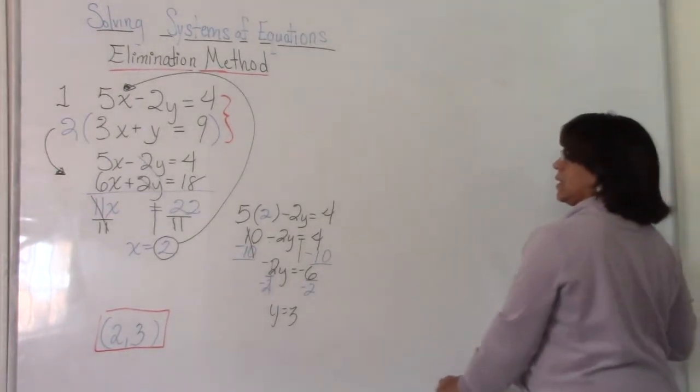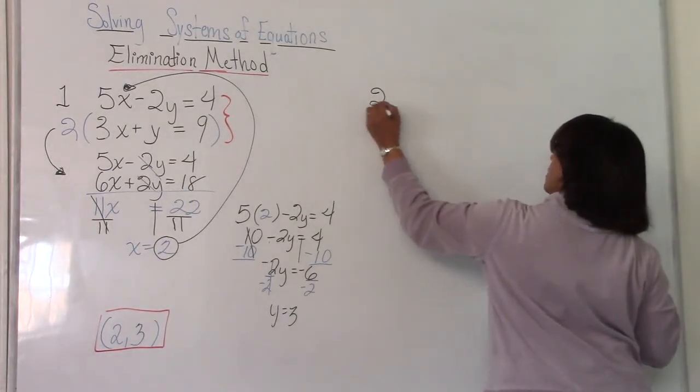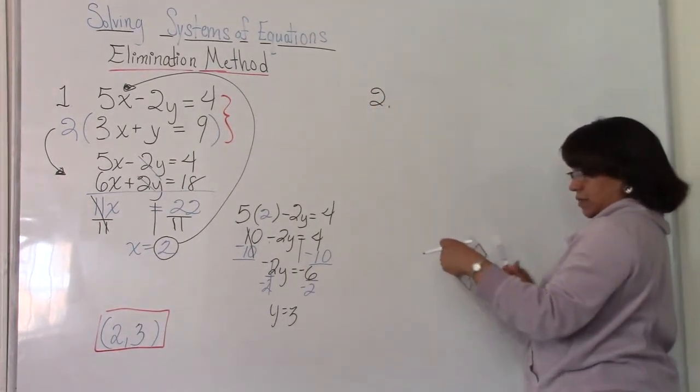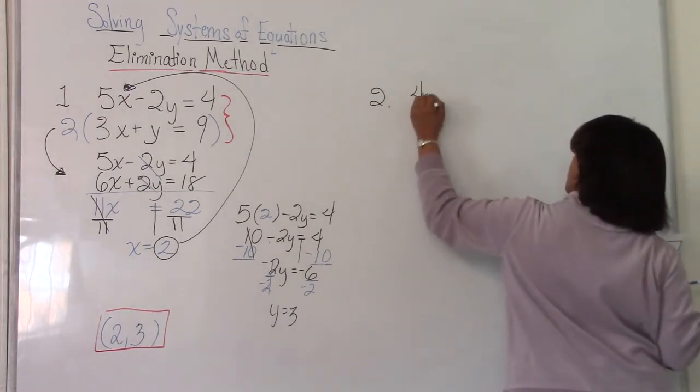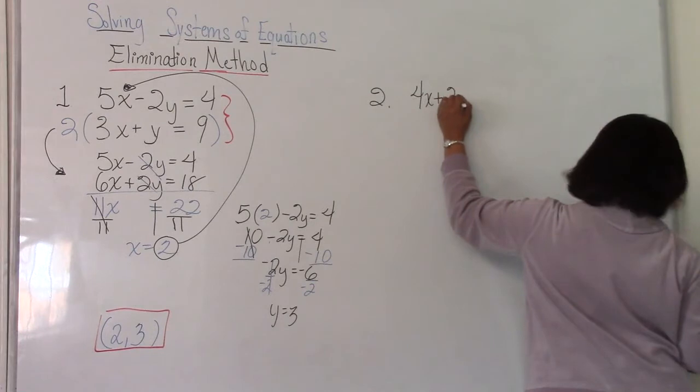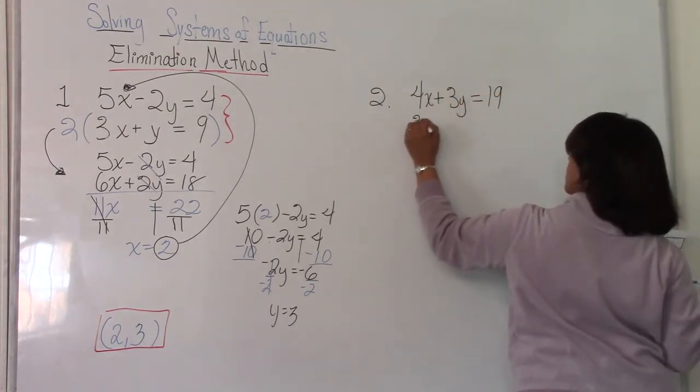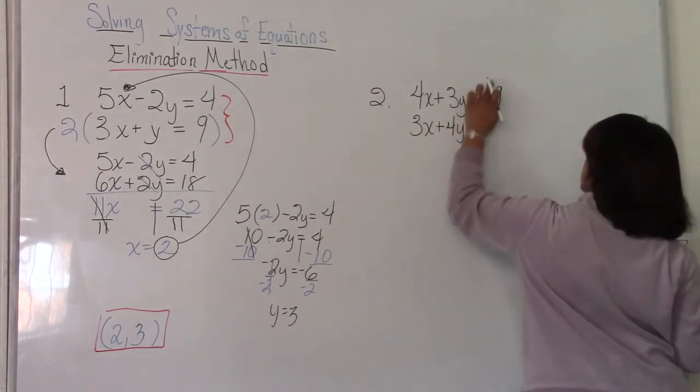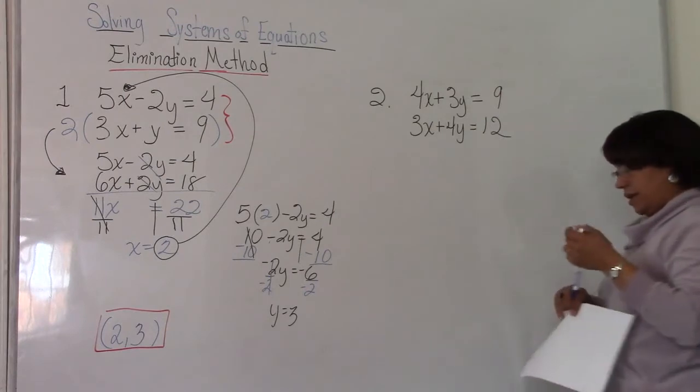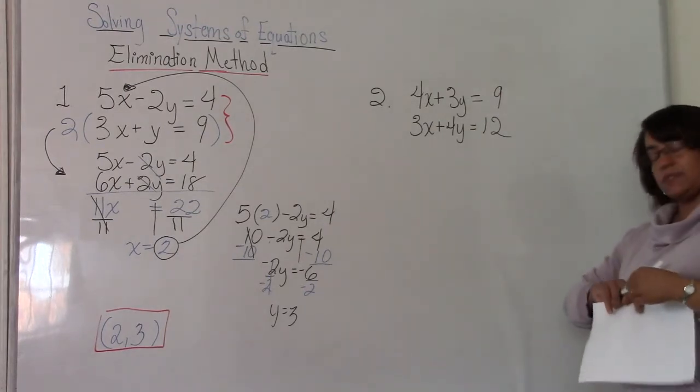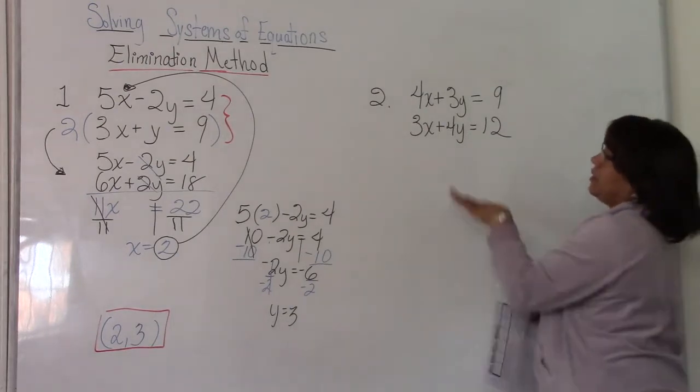We'll do one more. And then I'll let you practice. So because we only added one piece here, that's the multiplication piece. Everything else is pretty much the same. Let's do one where we can multiply both expressions. We have 4x plus 3y is equal to 9, and we have 3x plus 4y is equal to 12. So we don't have any opposites. We don't have opposite signs and we don't have opposite numbers. But we can create them.